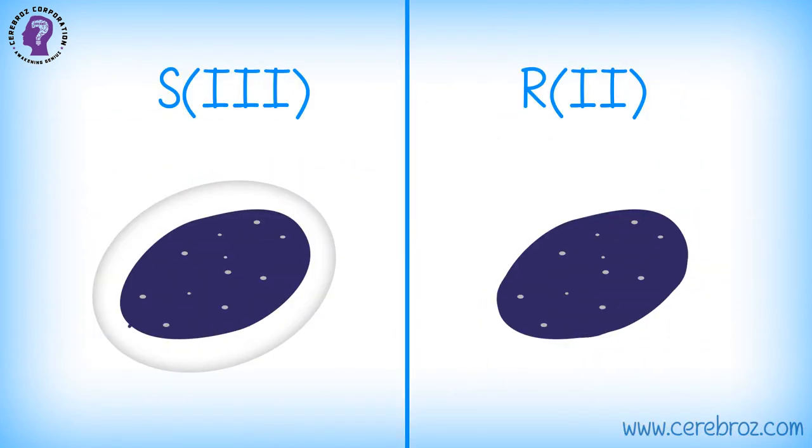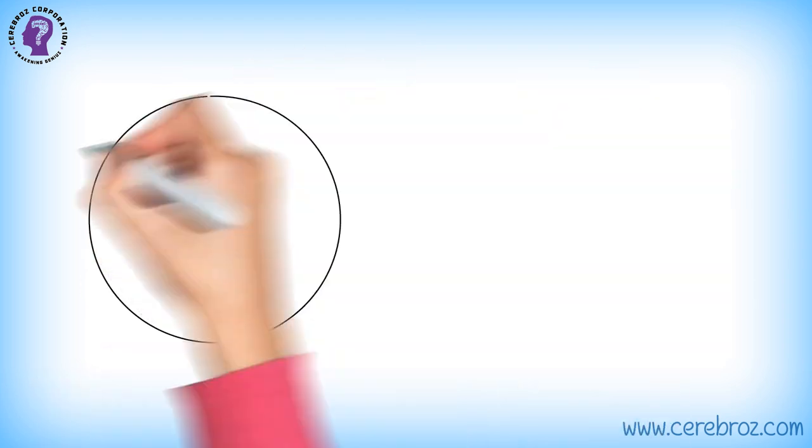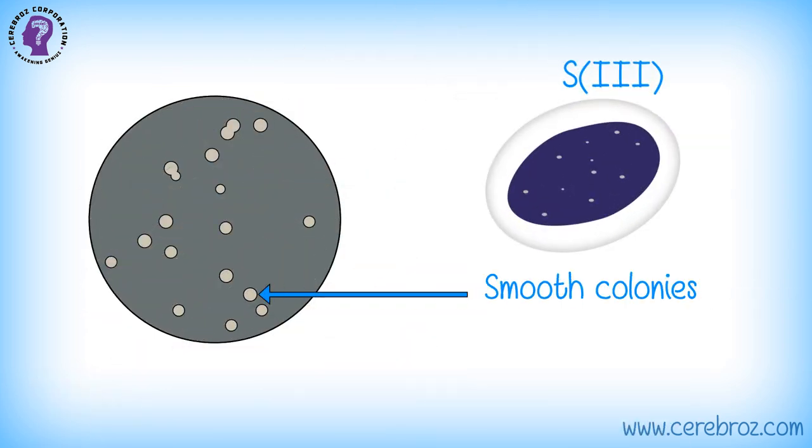Griffith's experiment. Griffith took two strains of pneumococcus bacteria. S3, which have smooth polysaccharide capsule, giving smooth colonies S, and it's virulent, causing pneumonia.